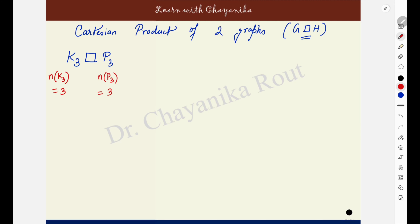When you find the Cartesian product of two graphs, suppose G and H, what you will see in the final graph is there are order-of-H number of copies of graph G, and there are order-of-G number of copies of graph H. The order of P3 is 3, so in the Cartesian product you are going to get 3 copies of graph K3. And since K3 has order 3, you will get 3 copies of graph P3 in the Cartesian product as well.